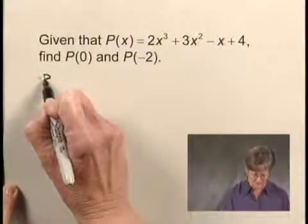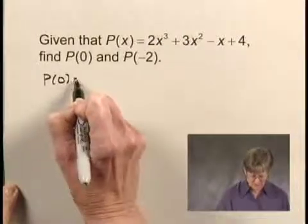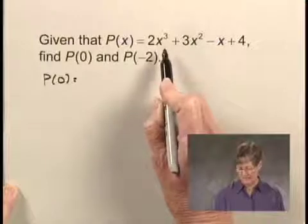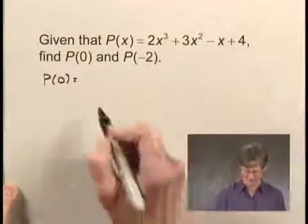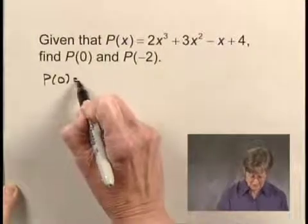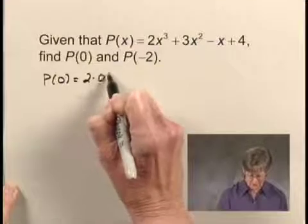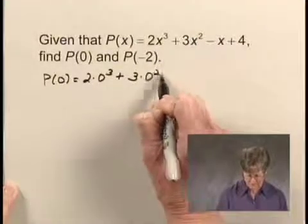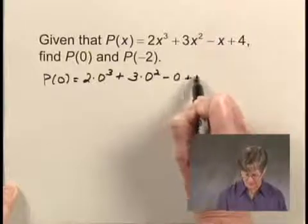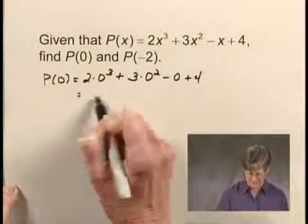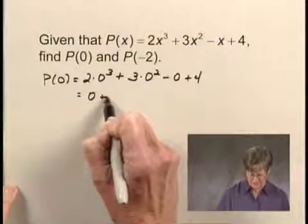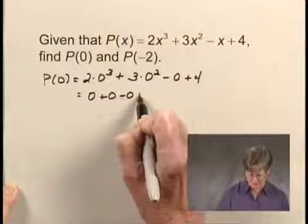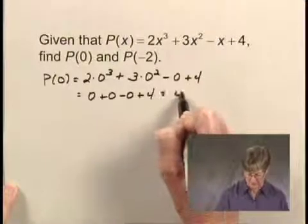Let's start with P(0). To do this, we substitute 0 in this expression every place that x occurs. So we have P(0) equals 2 times 0 cubed plus 3 times 0 squared minus 0 plus 4. And this is equal to 0 plus 0 minus 0 plus 4, or just 4.